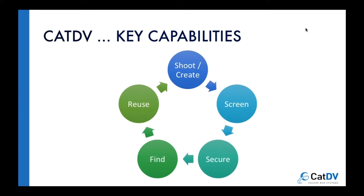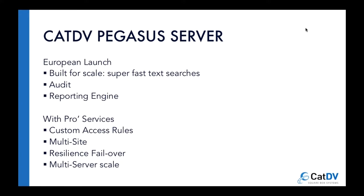CatDV is totally scalable from a small single user installation to a very large scale solution forming part of a corporate IT infrastructure. Key capabilities cover the entire lifecycle of a file — CatDV is all about file-based workflow, helping with the whole content creation process from initial shoot to screen, securing footage, enabling search and reuse. This could range from historic records to reuse in serious productions or saving time and money by avoiding reshooting the same stock footage.